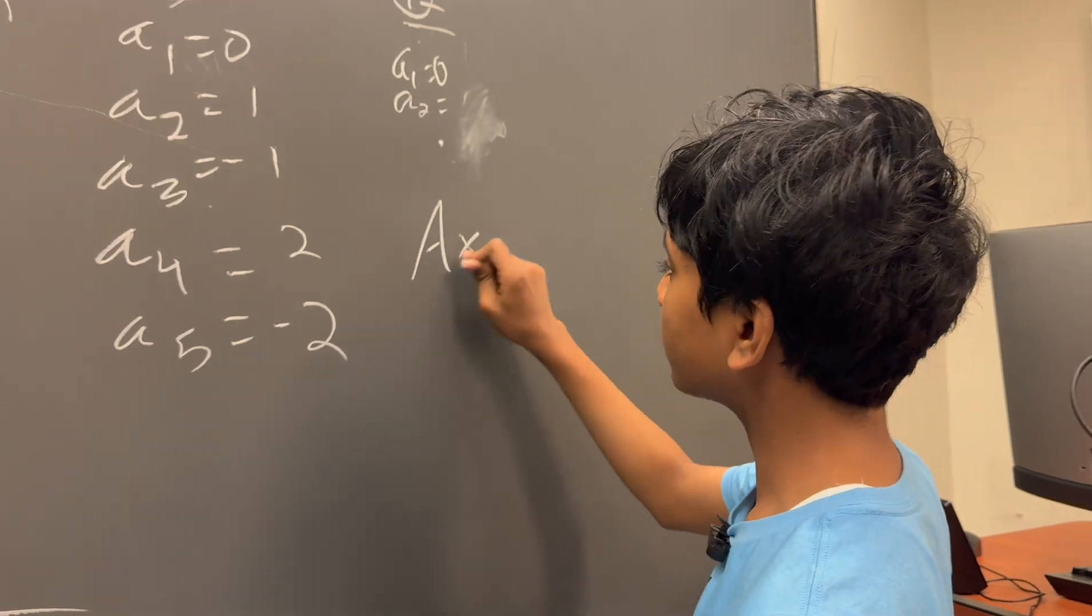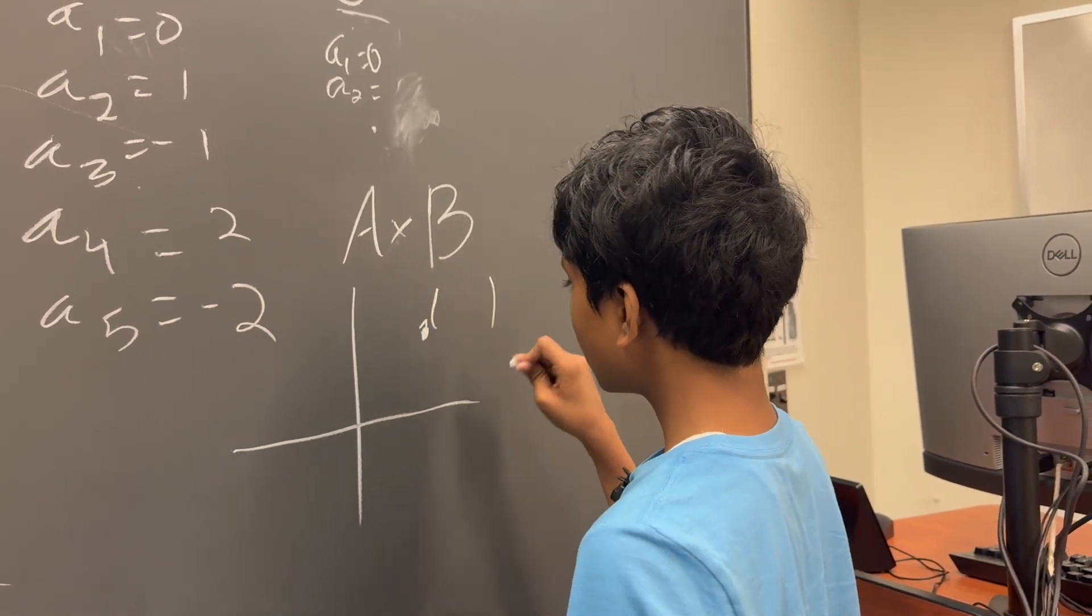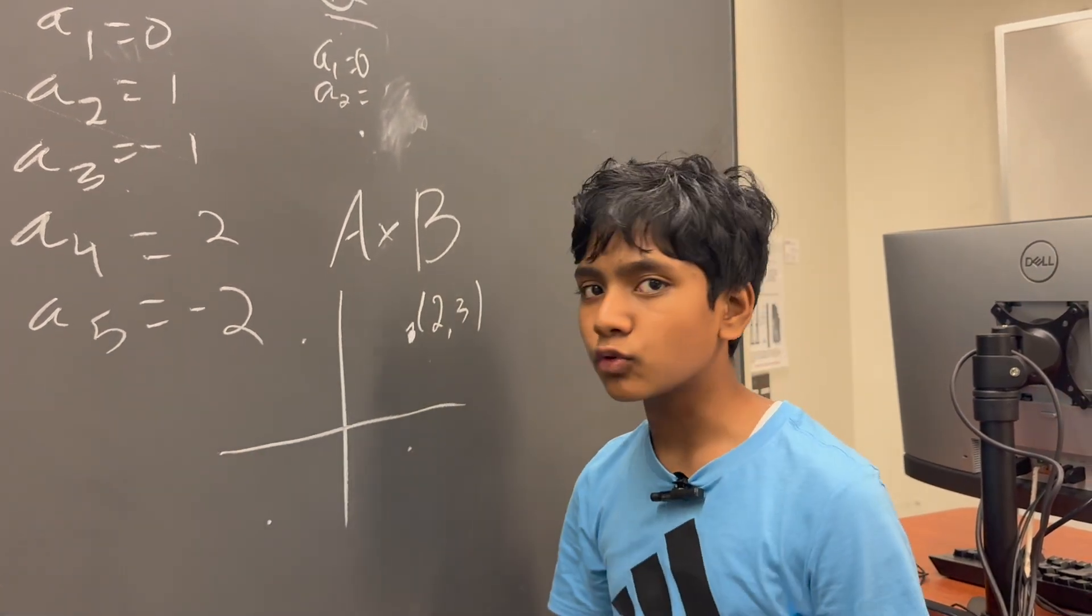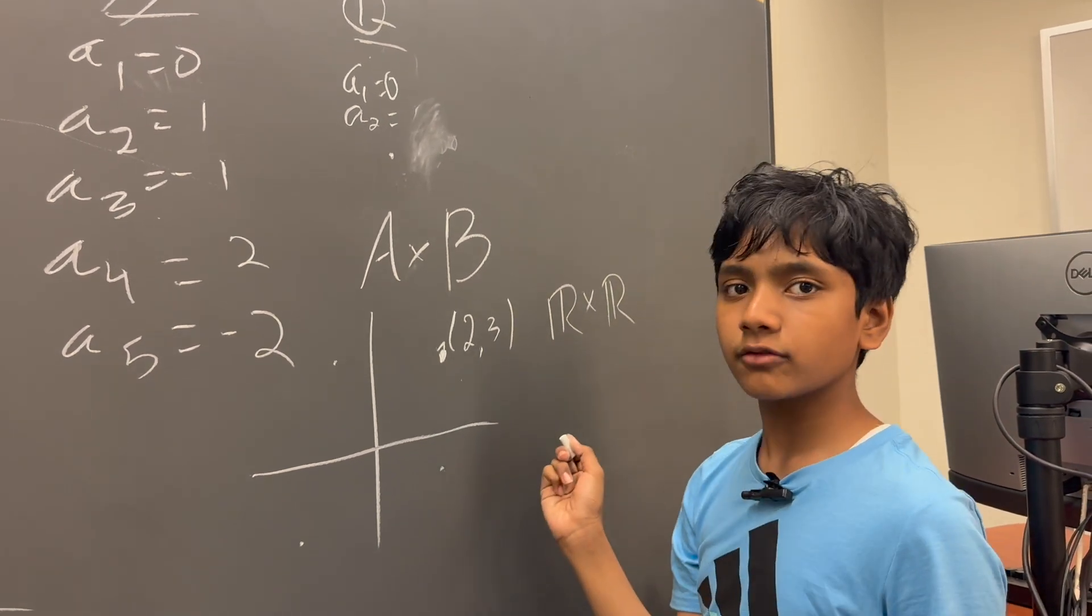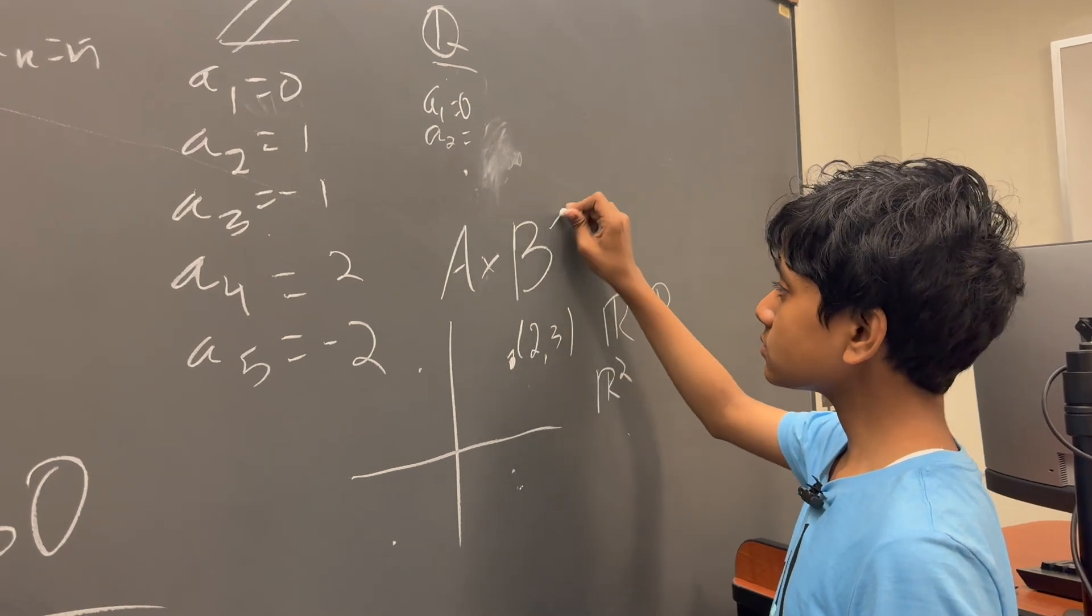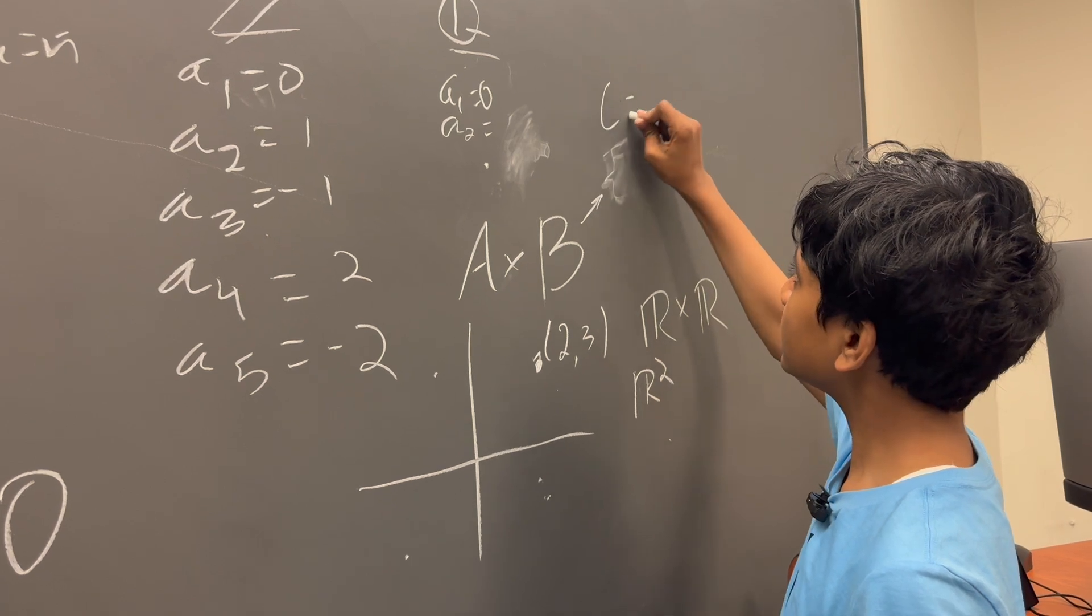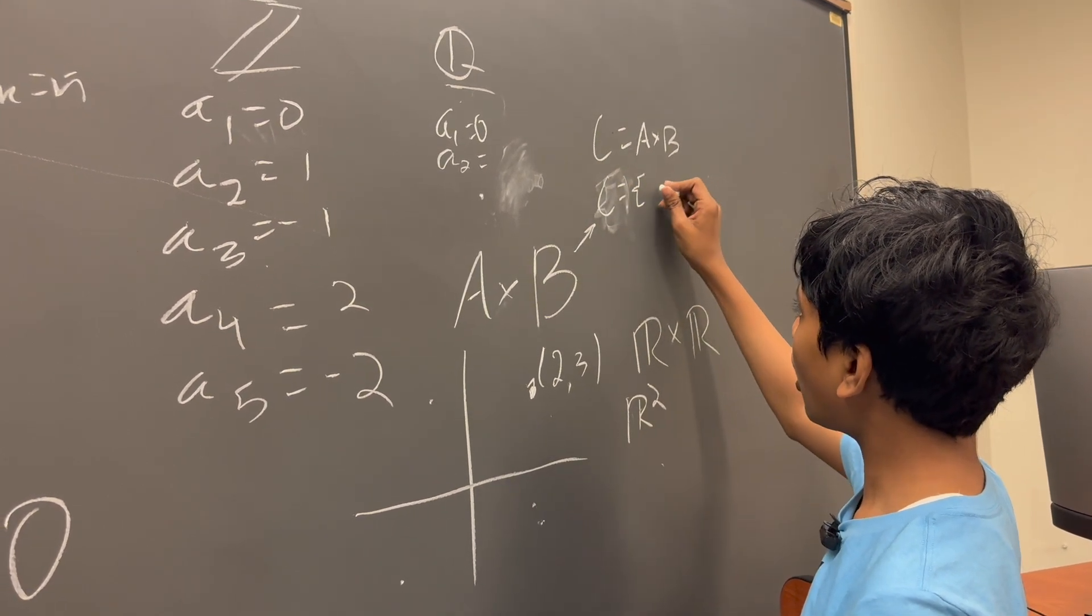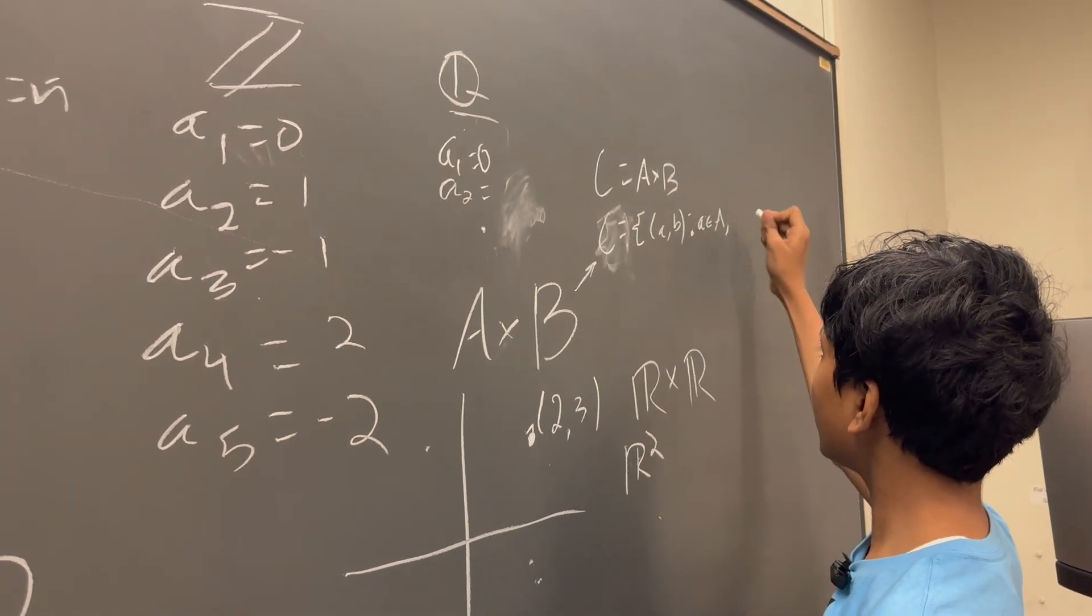We have to talk about the Cartesian product of two sets. Do you know what the coordinate plane is, Dad? Yeah. If I take this point, I'll say 2, 3. If I pick any point, the x-coordinate and the y-coordinate will always be real numbers, right? Yes. Then what we have here is the Cartesian product of the real numbers by the real numbers. That is the coordinate plane.